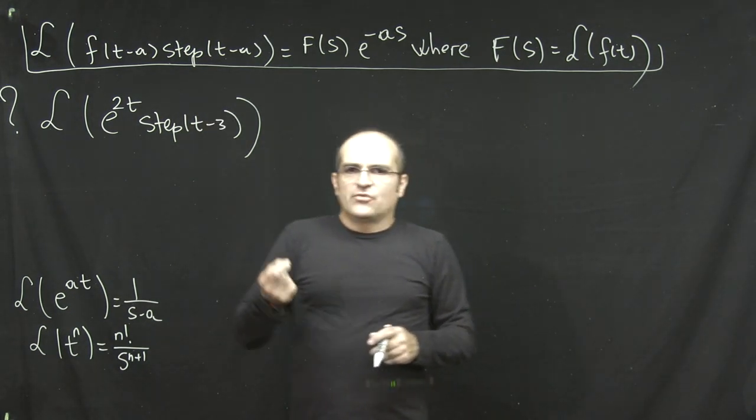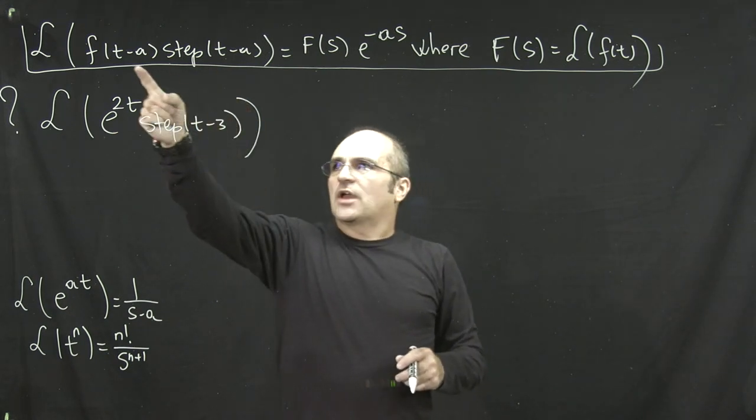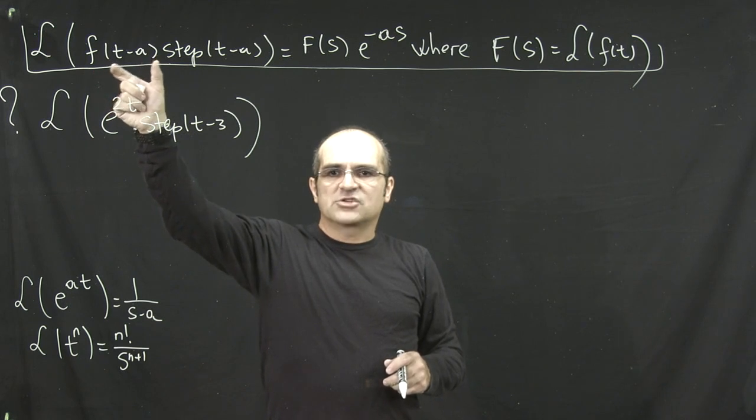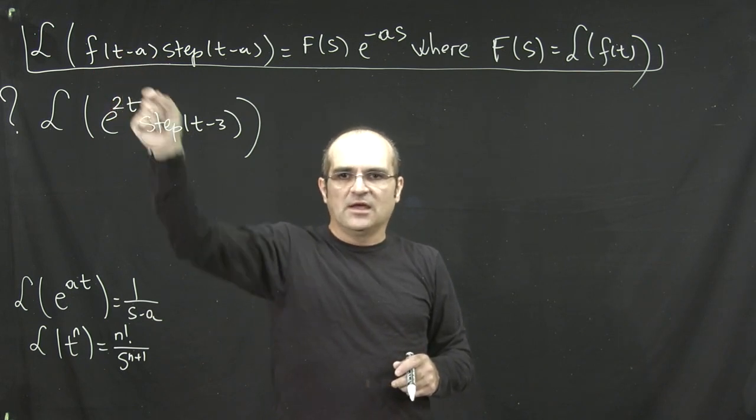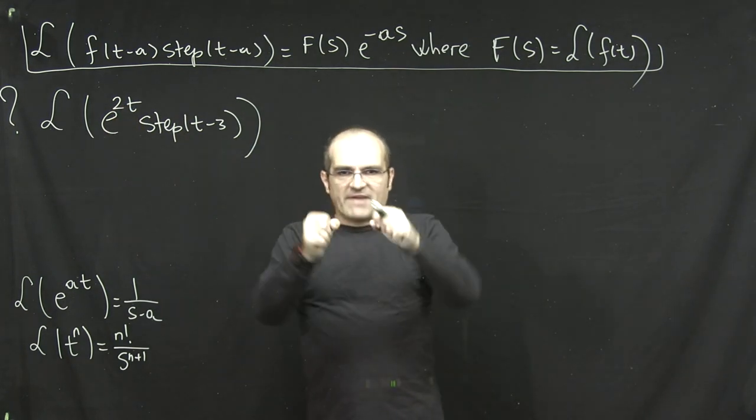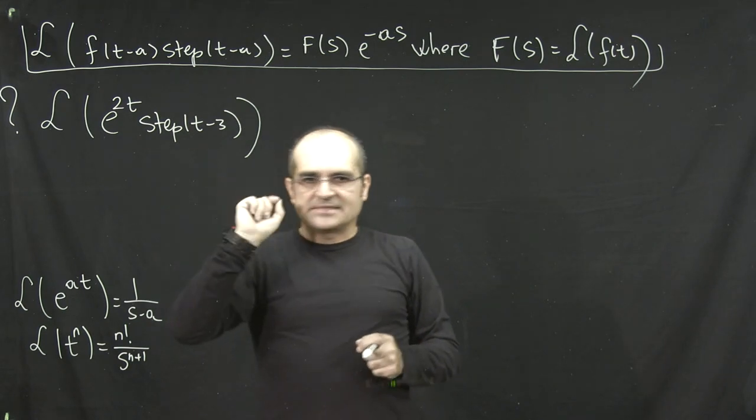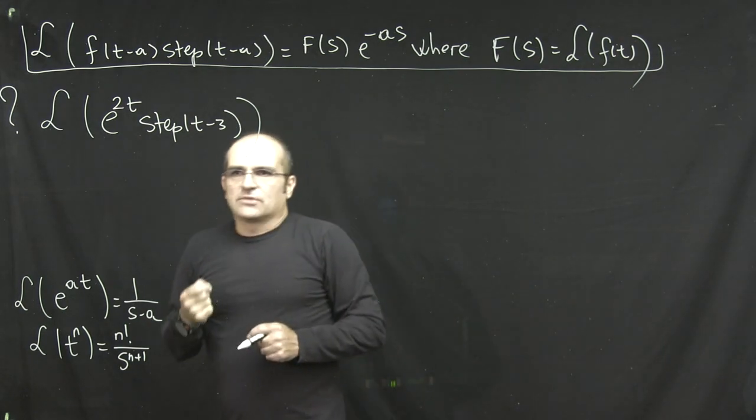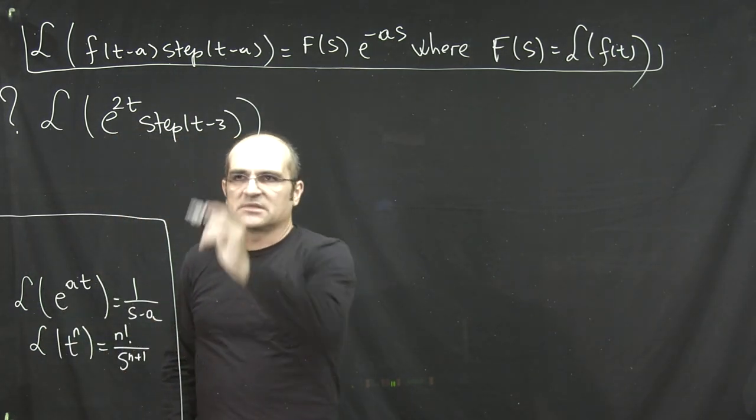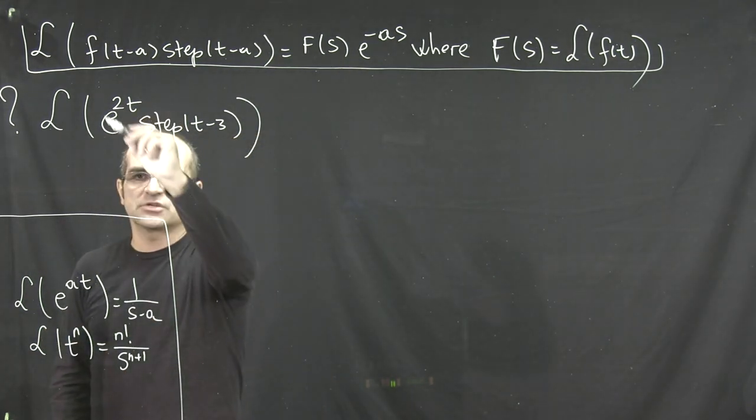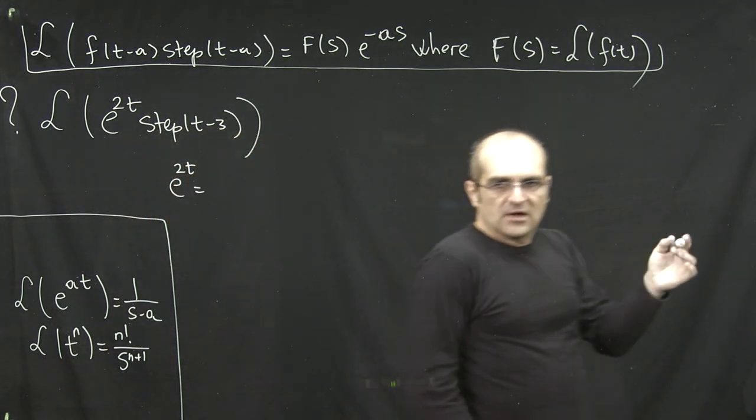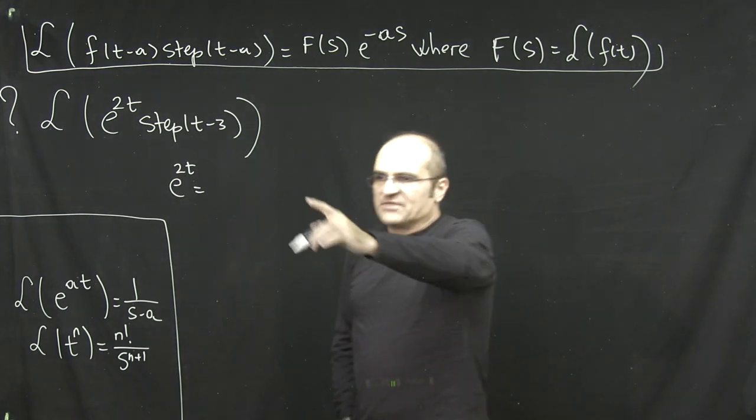As I mentioned before, the key thing is that you need to have the function multiplied by the step function in a function of t-a. So you have to emphasize t-a and view this function as an expression evaluated at t-a. In my particular case, that's t-3. So that is the reason why in situations like this, you take this function and try to do some algebra manipulations to emphasize t-3.